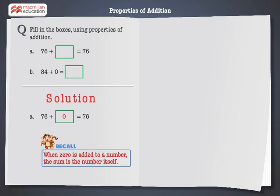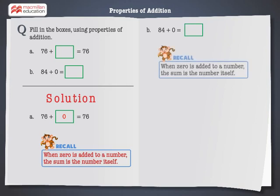Let's solve the next problem: 84 plus 0 is equal to dash. When 0 is added to a number, the sum is the number itself. Hence, fill 84 in the box.